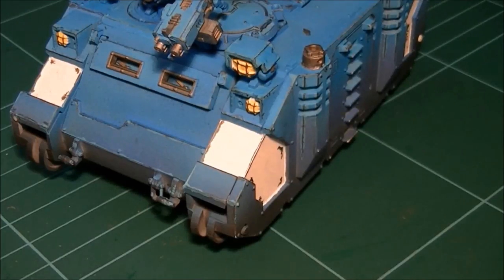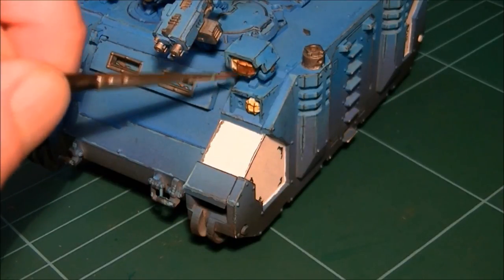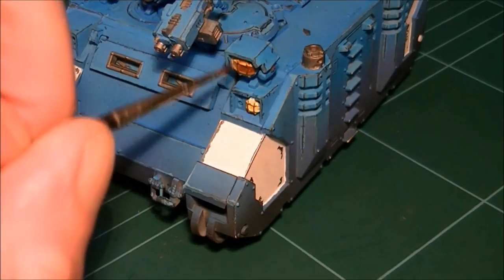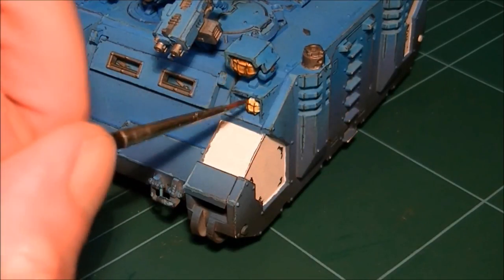I've painted all the lights with some burst yellow and just put a bit of bolt gun metal over the actual grills on the front of them. What I'm going to do here is give them a wash of Gryphonne Sepia.